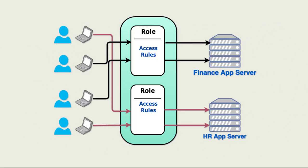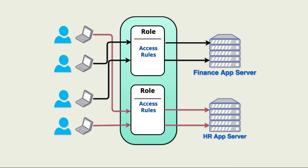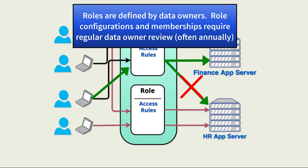Formally defined in 1992, RBAC — role-based access control — enables object access based on a user's role in the business, only allowing access to information needed to perform business tasks associated with that role. It also enforces least privilege, controlling what the assigned user can do with the data, and separation of duties that helps to prevent fraud and costly mistakes. Data owners define roles and what they can access, usually associated with job IDs assigned by HR. Annual data owner reviews of role access are needed to prevent permissions creep — expanding access caused by enabling temporary access that is not removed when no longer needed.